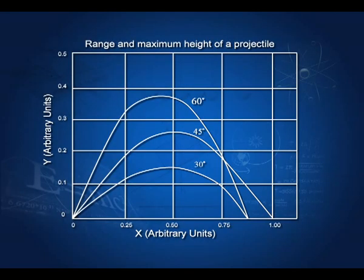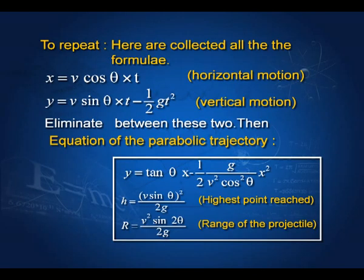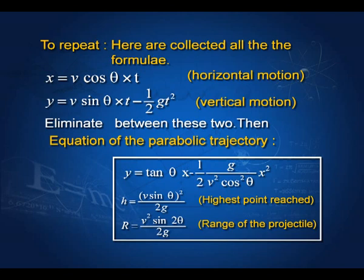I have drawn graphs for projectiles launched at 30 degrees, 45 degrees, and 60 degrees. You can see that the projectile at 45 degrees has the maximum range. To summarize all facts: horizontal distance is v cos θ times t; vertical distance is v sin θ times t minus half g t squared. Eliminating t gives y equal to x tan θ minus half g x squared divided by v squared cos squared θ — the equation of a parabola. The highest point is v sin θ squared divided by 2g, and the range is v squared sin 2θ divided by 2g.